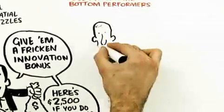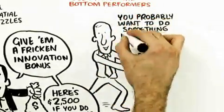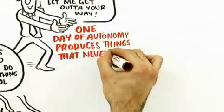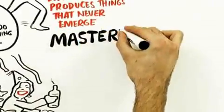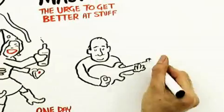They're not doing this at all. They're essentially saying, you probably want to do something interesting, let me just get out of your way. One day of autonomy produces things that have never emerged. Let's talk about mastery. Mastery is our urge to get better at stuff. We like to get better at stuff.